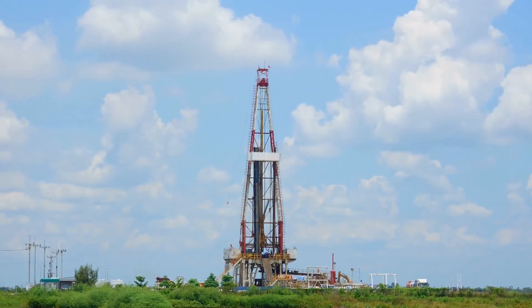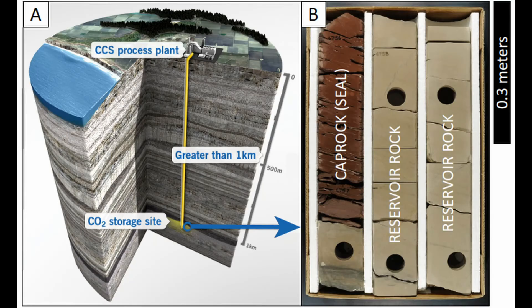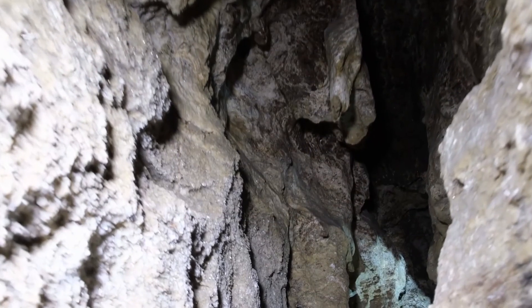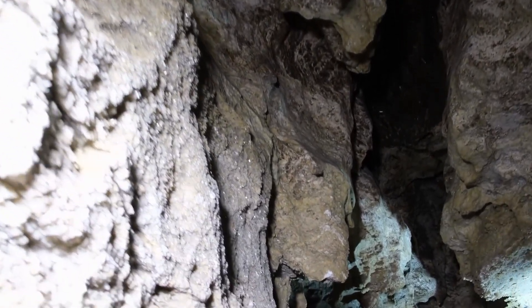Reservoirs can also be used to store fluids. Natural gas, carbon dioxide, and hydrogen may all be stored in underground reservoirs. In addition to having the permeability and porosity necessary for storage, these reservoirs also need to have a cap rock with very low permeability to prevent the fluid from moving out of the reservoir. Shale, anhydrite, and salt are common cap rocks.